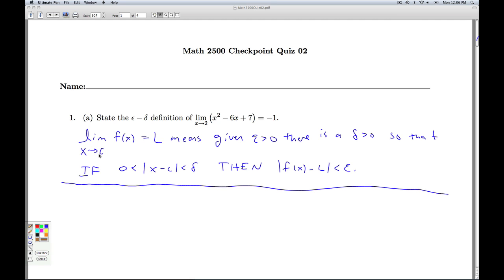In this case, what do we have? x is approaching 2, so c is 2. The f(x) is x squared minus 6x plus 7, and l is negative 1. So our definition would be: the limit as x approaches 2 of x squared minus 6x plus 7 equals negative 1 means given epsilon greater than 0, there is a delta greater than 0, so that if 0 is less than the absolute value of x minus 2 is less than delta, then the absolute value of x squared minus 6x plus 7 minus negative 1 is less than epsilon.